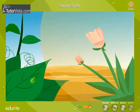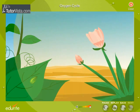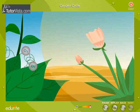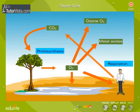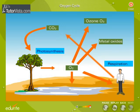Some oxygen molecules will get converted to ozone, and the reverse will also take place. Observe the given illustration to understand the oxygen cycle in its totality.